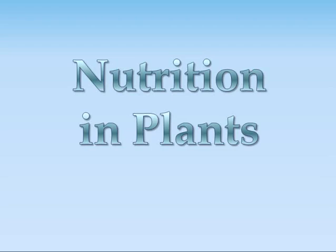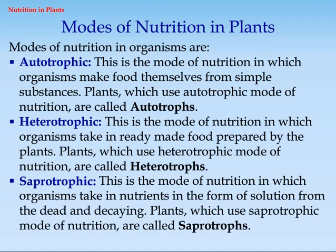Nutrition in Plants. Modes of nutrition in plants. Modes of nutrition in organisms are: Autotrophic — this is the mode of nutrition in which organisms make food themselves from simple substances. Plants which use autotrophic mode of nutrition are called autotrophs.